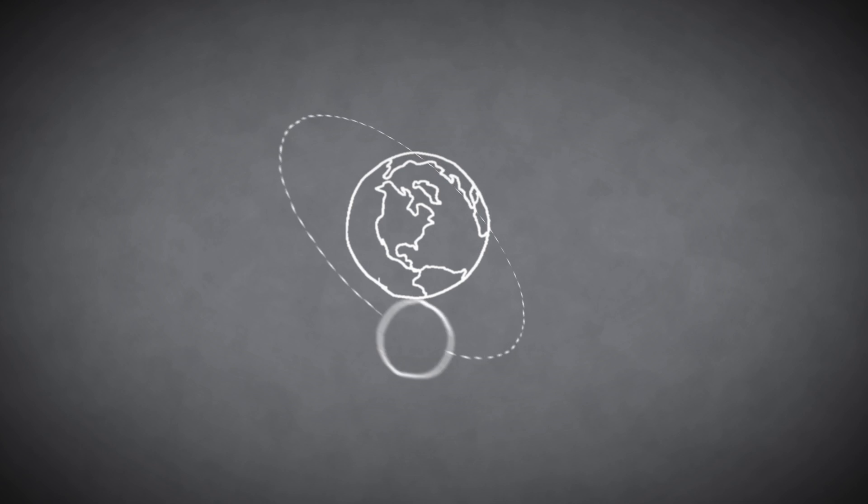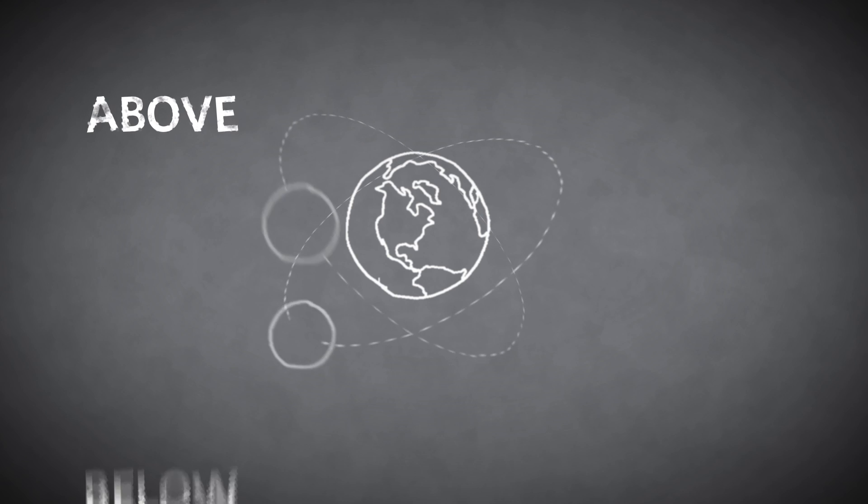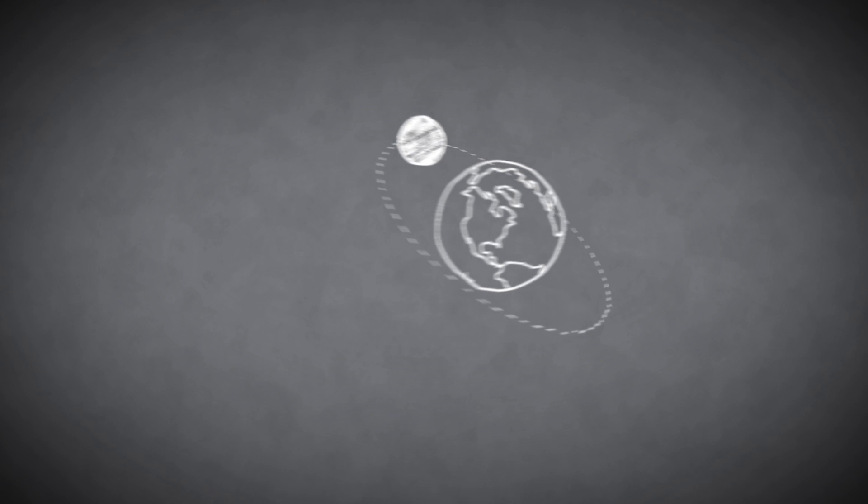Most of the time, the new moon passes either above or below the sun. But roughly every six months, a perfect alignment is possible. The moon can cast its shadow directly onto Earth's surface. Observers in the path of the shadow will see the silhouette of the new moon blocking all or part of the sun's disk from view.